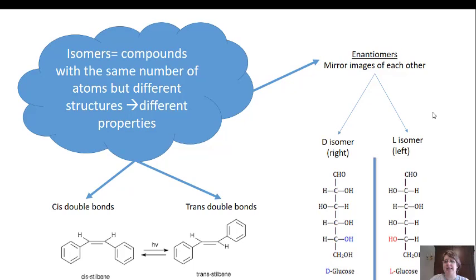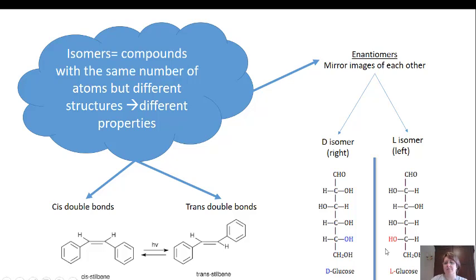Another type of isomer is an enantiomer. These are mirror images of each other, and we frequently see these in biology and biochemistry. The two most common kinds are the D-isomer and the L-isomer, referring to which side — right or left — a group is on. Here you have glucose in its non-ring form. The three main OHs are on the right side in the D-isomer, and on the left side in the L-isomer. You find L-isomers more frequently in nature, but D-isomers exist as well.